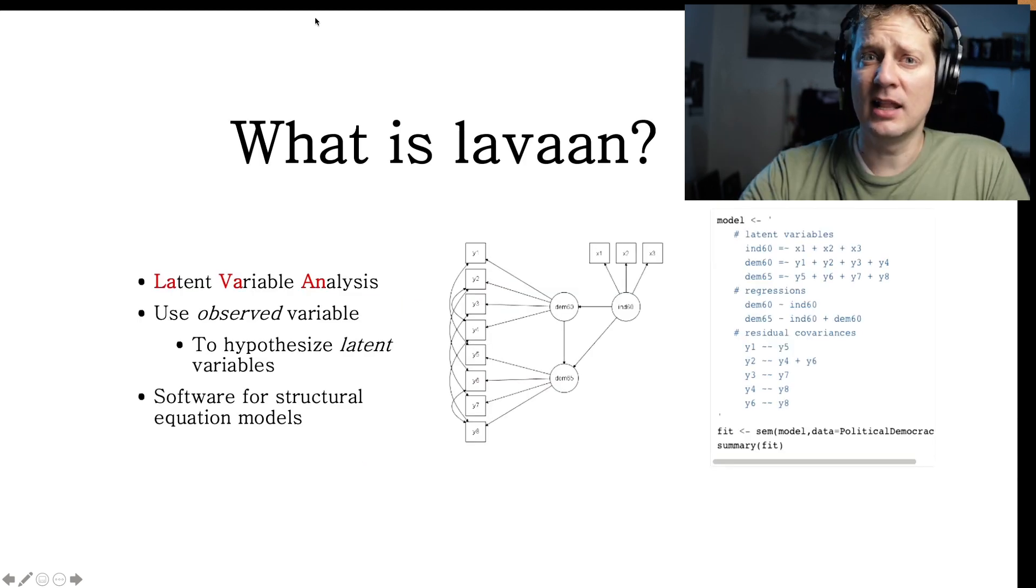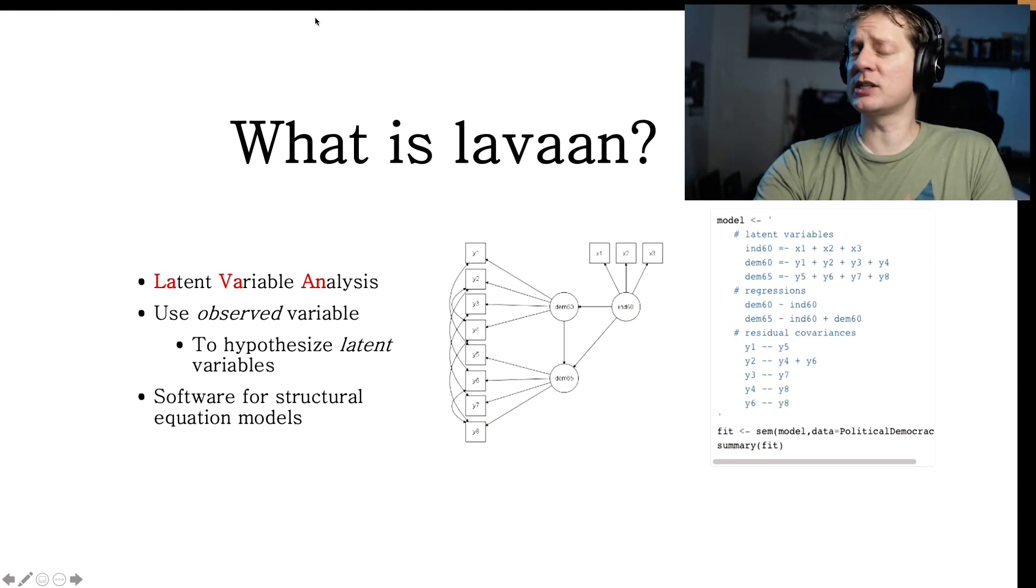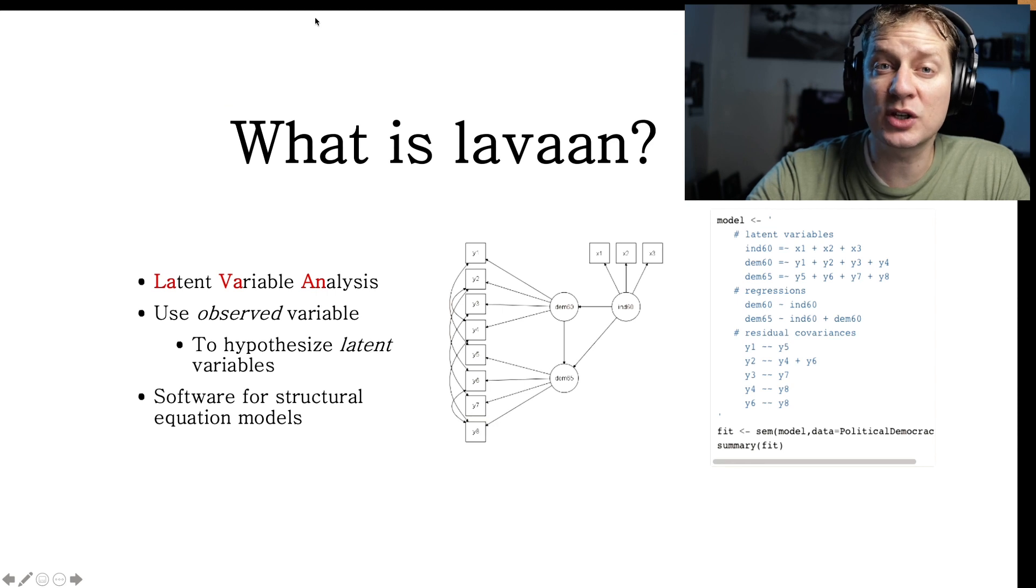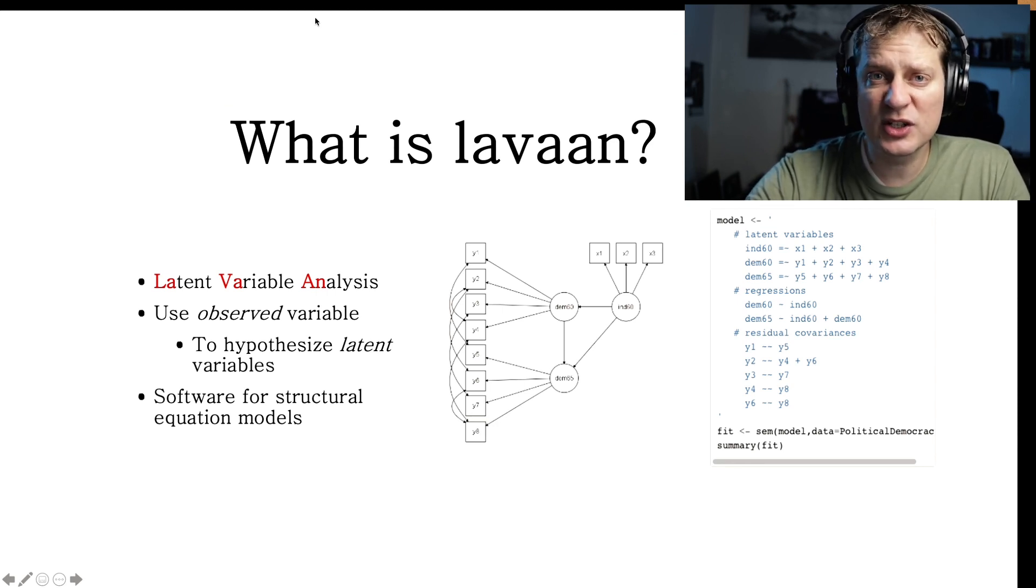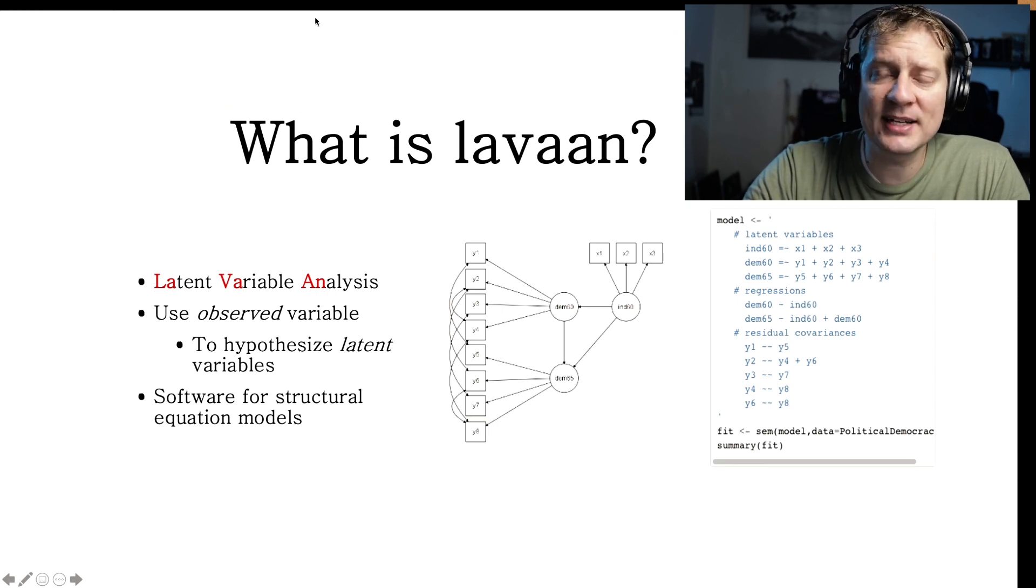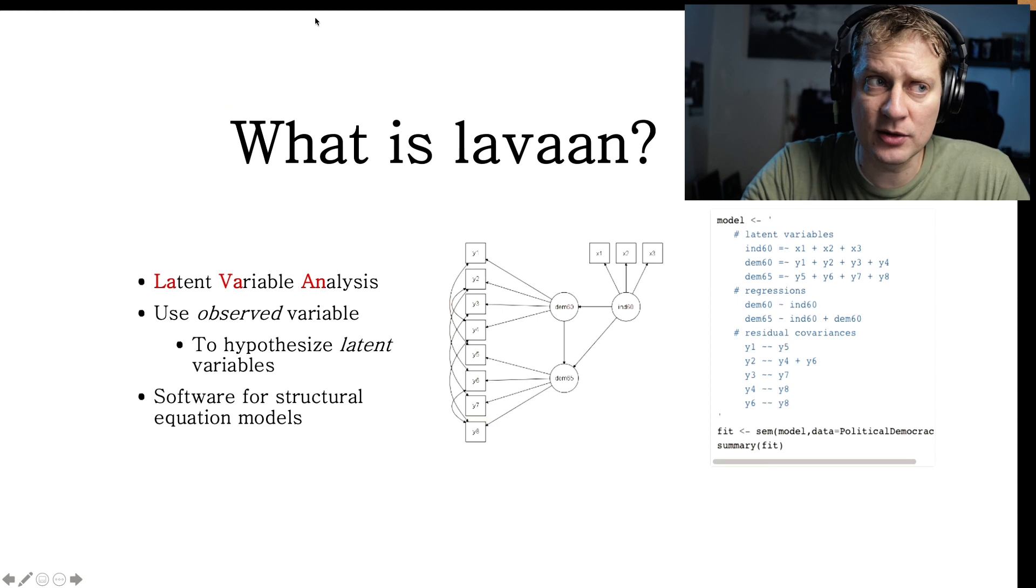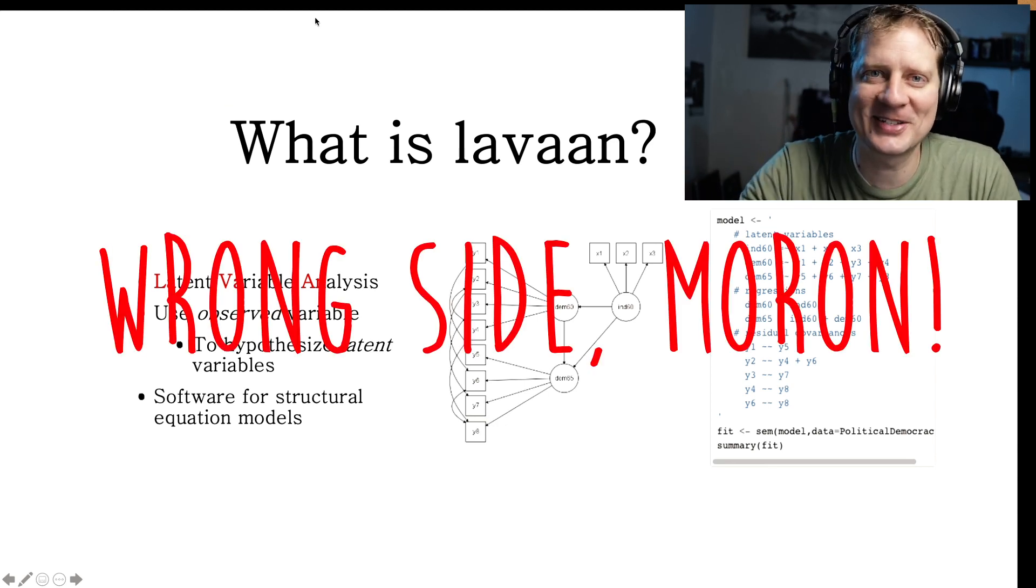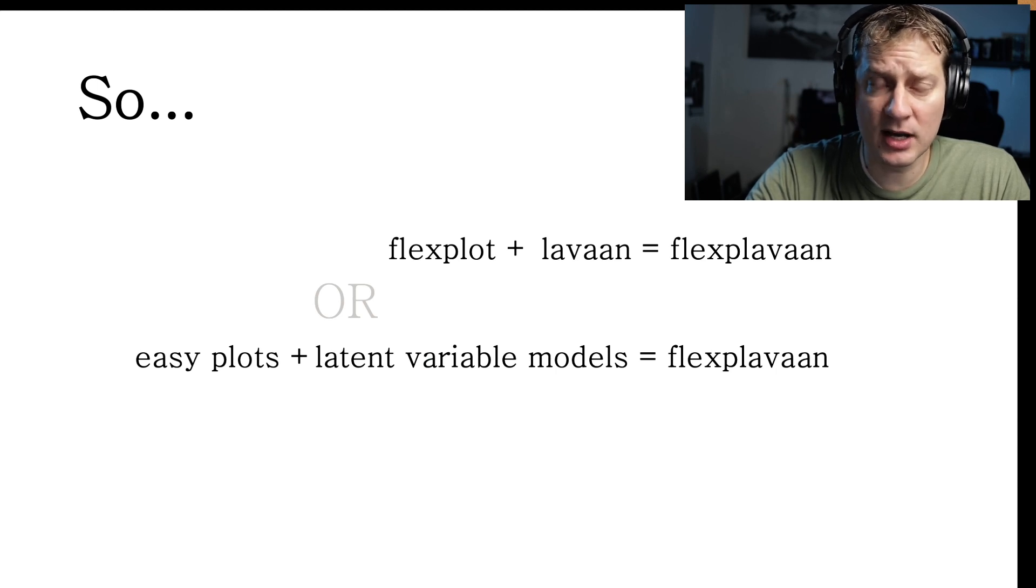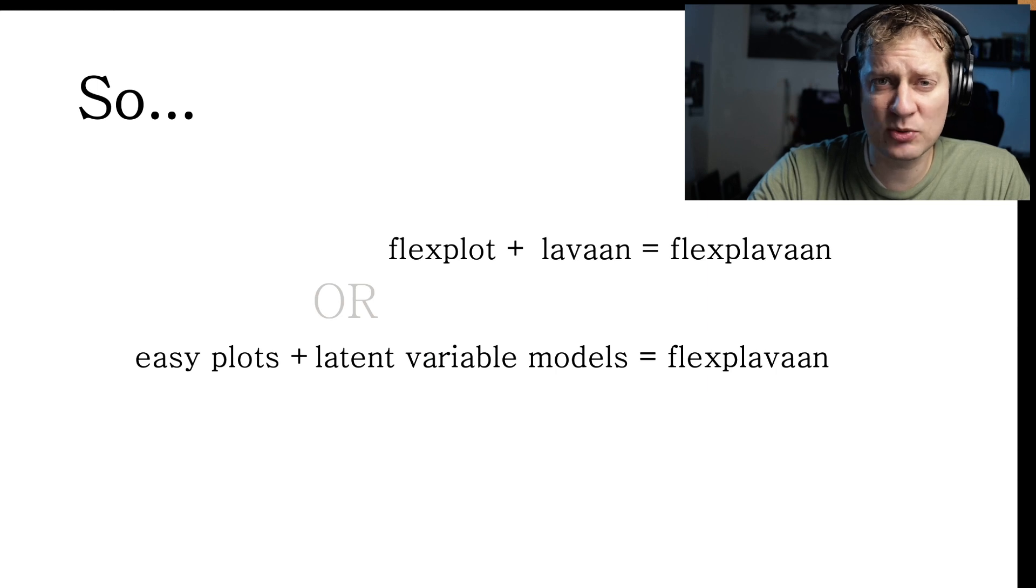What about Lavon? What is Lavon? Lavon itself is an amalgamation of words. My golly goodness, we have so many amalgamations going on here. Lavon is short for latent variable analysis. The idea behind Lavon is we can use it to fit models that have latent variables or unobserved variables. We use the observed variables to posit what the latent variables might look like. It is one R package that a lot of people use to fit structural equation models. To recap, FlexPlot plus Lavon equals FlexPlavon. Or we are combining easy plots with latent variable models.